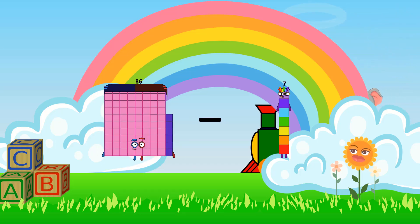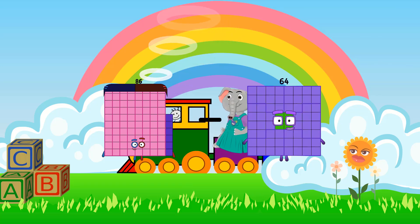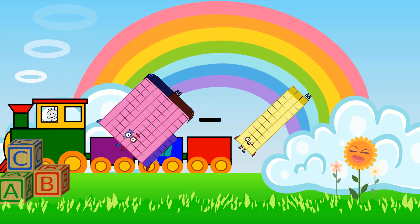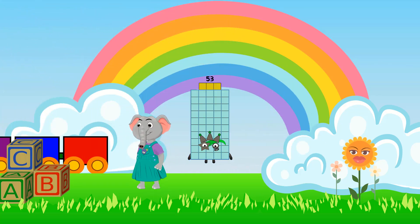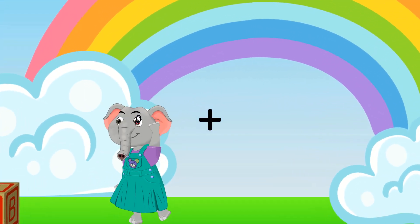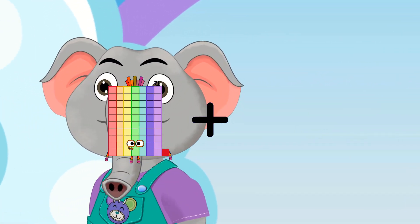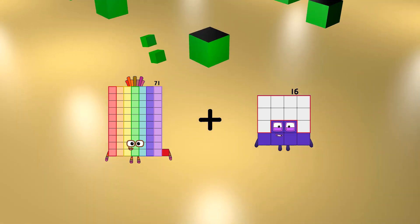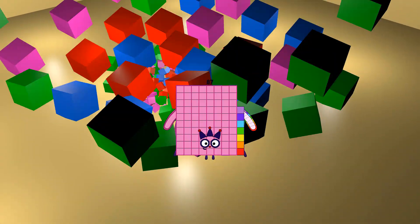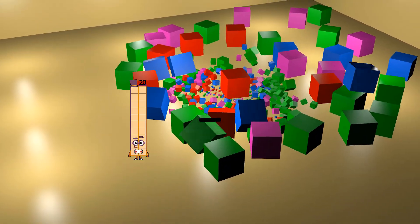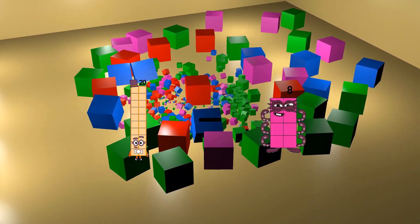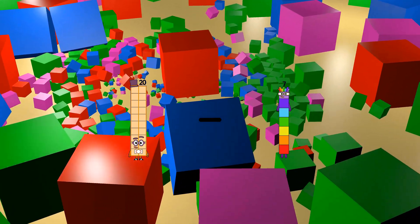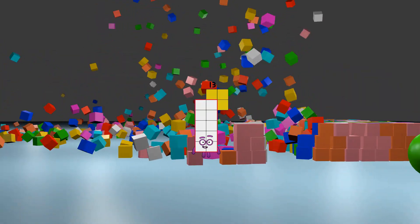86 minus 33 equals 53. 71 plus 16 equals 87. 20 minus 7 equals 13.